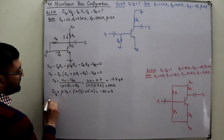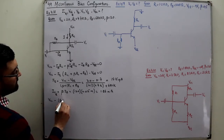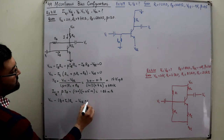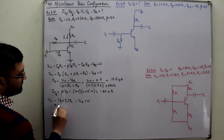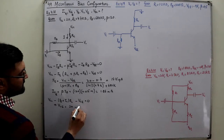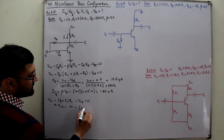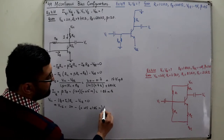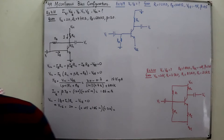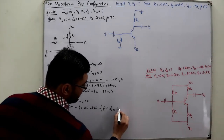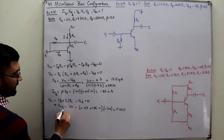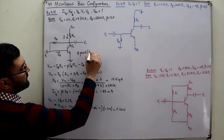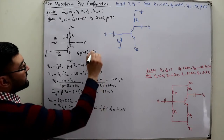We can find VCE through the output KVL: VCC minus (IB + IC) times RC minus VCE equals zero. VCE comes out to be 20 minus (0.015 + 1.86 mA) × 4.7kΩ, which gives 11.26 volts. So the Q-point coordinates are VCE = 11.26V and IC = 1.86 mA.